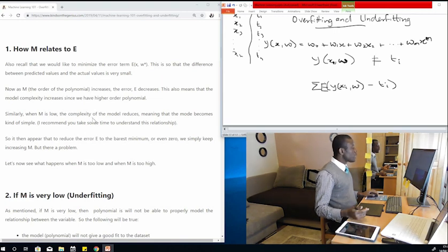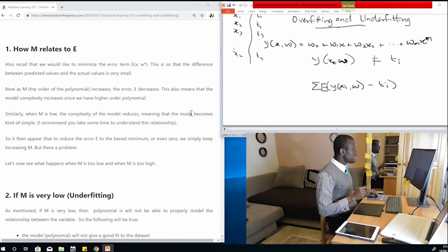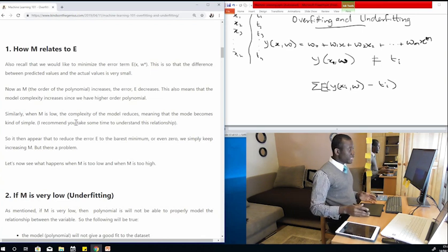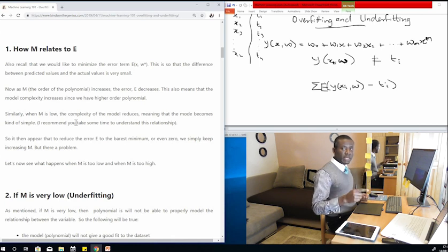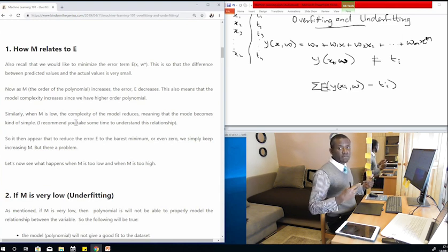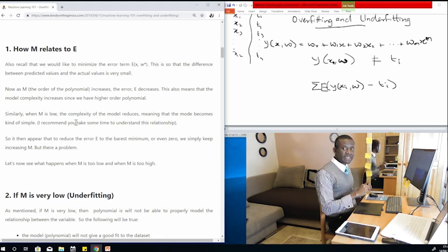Similarly, when M is low, the complexity of the model reduces, meaning that the model becomes kind of simple. So the more you increase the order of this polynomial, the more the model becomes complex. But at the same time, the more you have a more accurate model that fits your data. So that is something you need to think about.